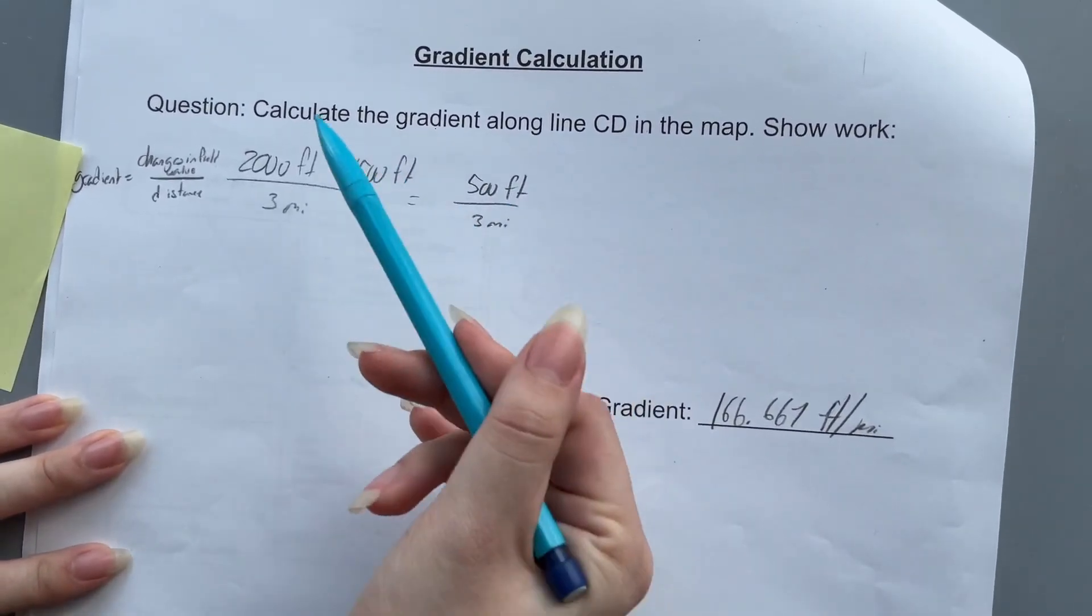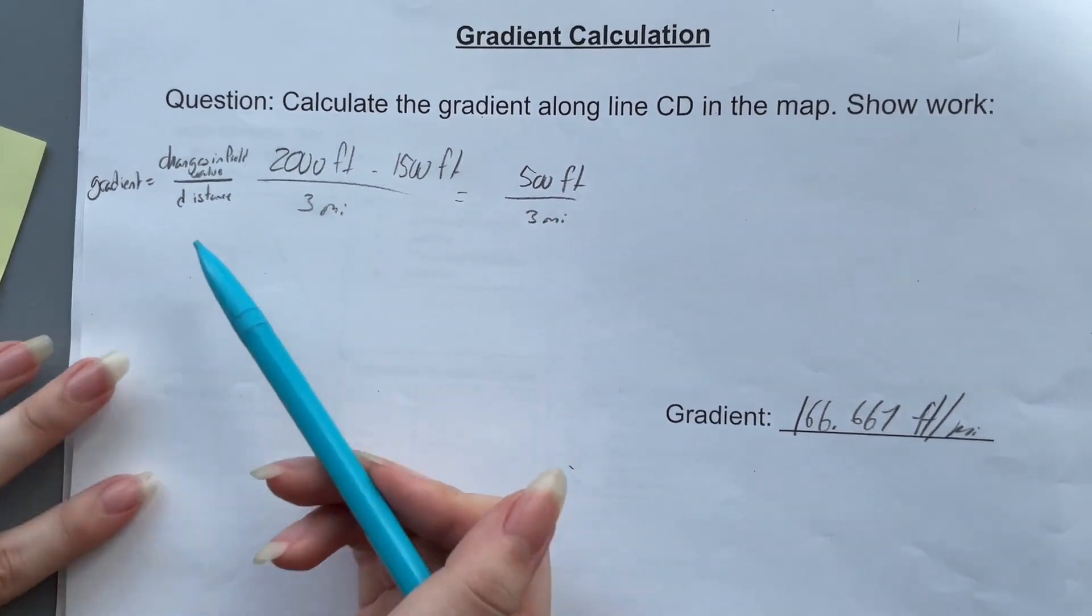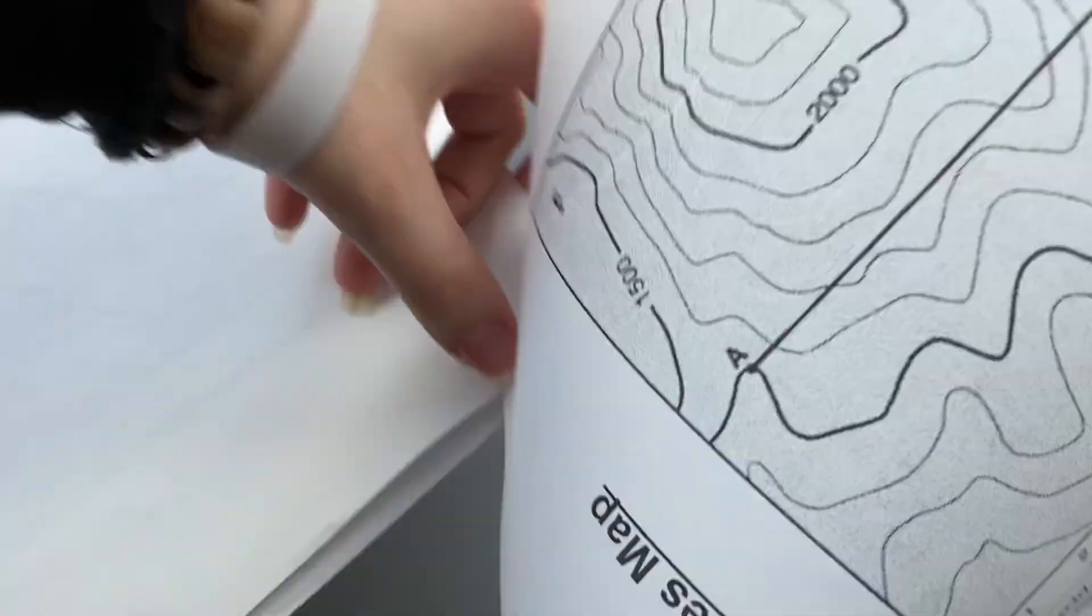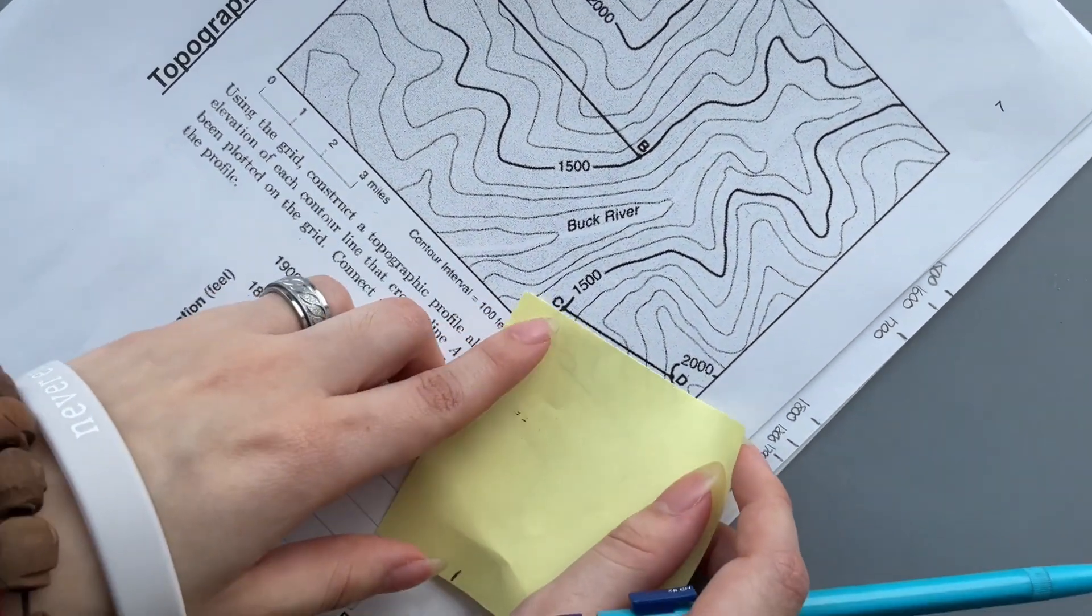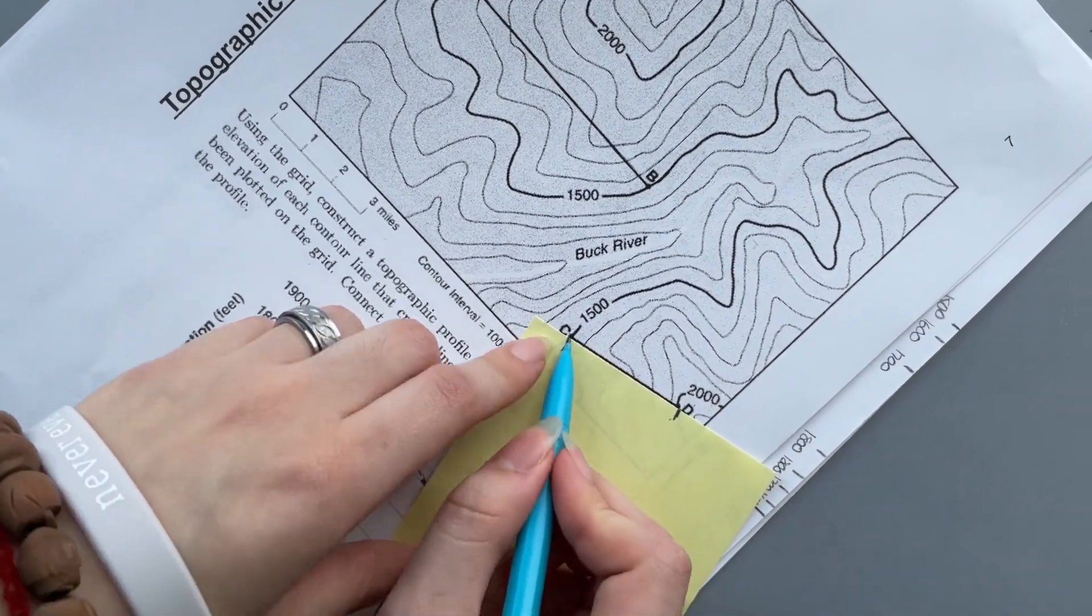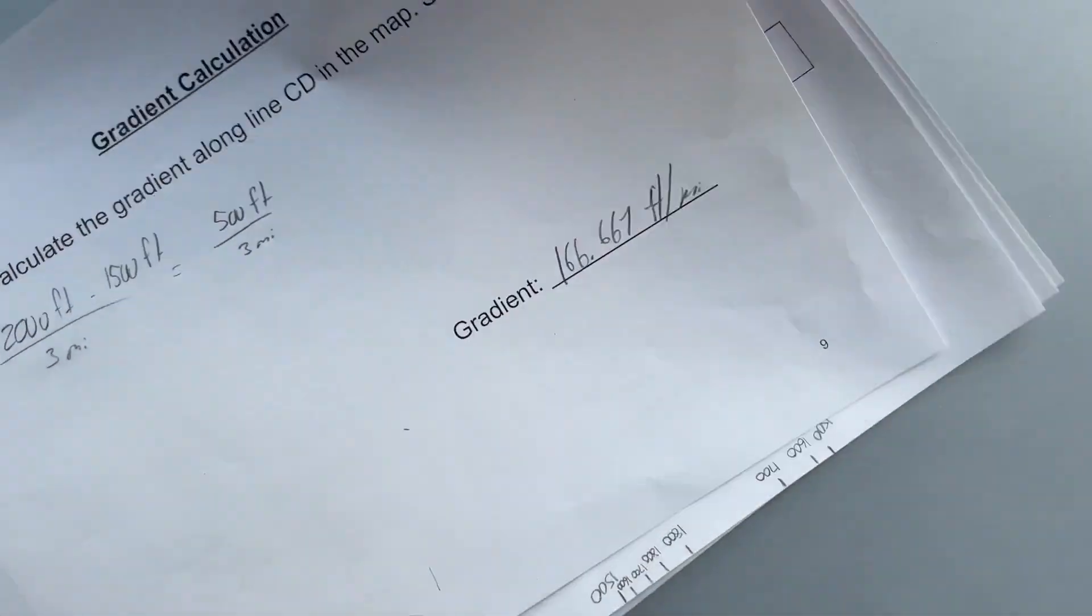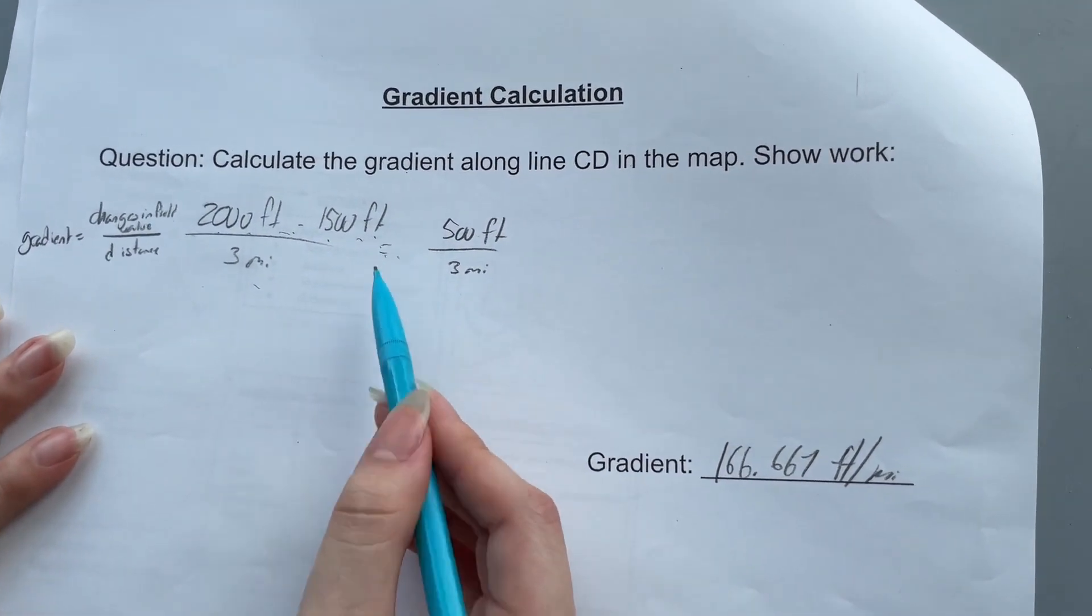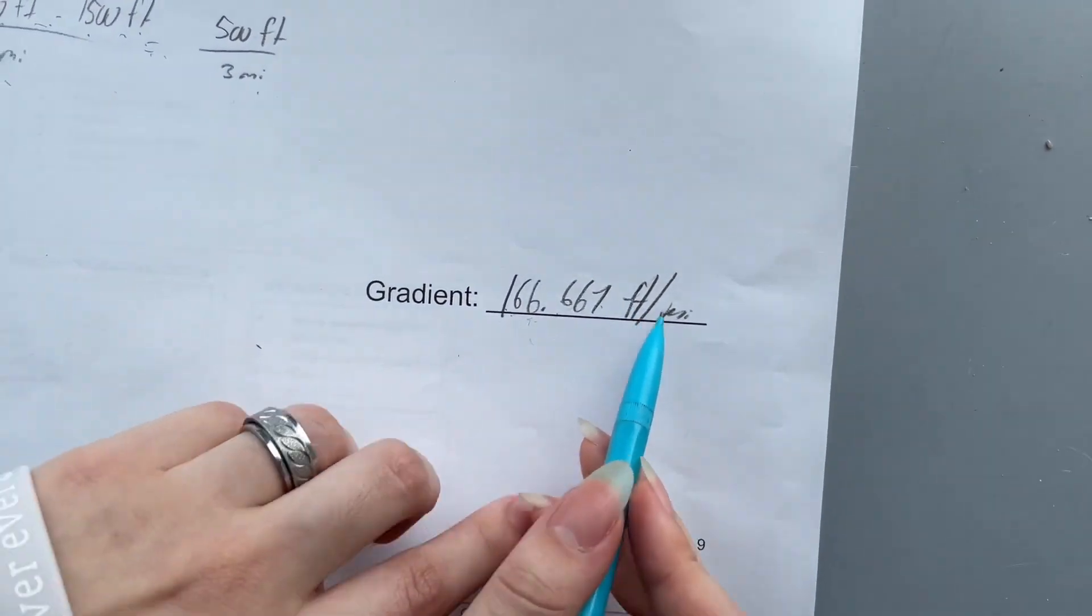Okay, gradient calculation. Calculate the gradient along line CD in the map. So first to solve this, you have to know the formula which is on the first page of the earth science reference table. So gradient equals change in field value over distance. So remember, line CD. So we can use our scrap paper to find the distance. So we know it's 2000 and 1500. Find the distance using this, it's exactly three miles. So our distance is three miles. So to calculate change in field value, 2000 feet minus 1500 feet over three miles. And so we do the math, it's 500 feet over three miles, and we end up with 166.667 feet per mile.